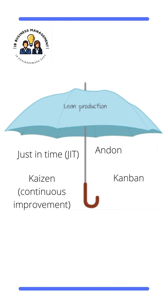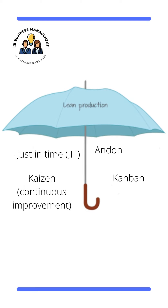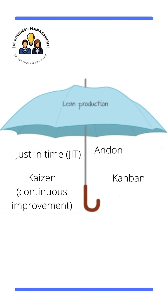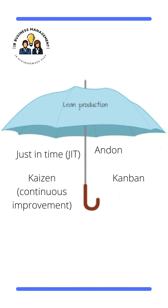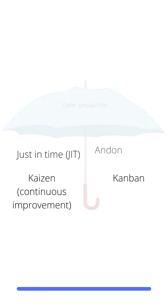The principal methods of lean production covered in this section of the course are Kaizen, Just-in-Time, Kanban, and Andon. Cell production and total quality management are also widely regarded as methods of lean production, but those will be covered in a future video.